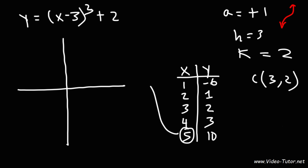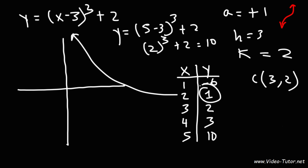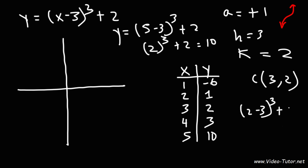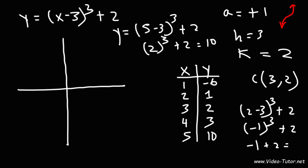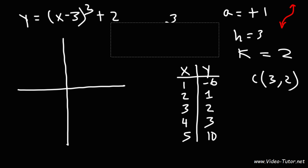If you plug in 5 into the equation: 5 minus 3 is 2, 2 to the third power is 8, and 8 plus 2 is 10 — confirming that point. If we plug in 2, we get 2 minus 3 to the third power plus 2: 2 minus 3 is negative 1, negative 1 to the third power is negative 1, and negative 1 plus 2 is positive 1. So if you don't want to plug in each point individually, the method I showed you for cubic functions works quickly.